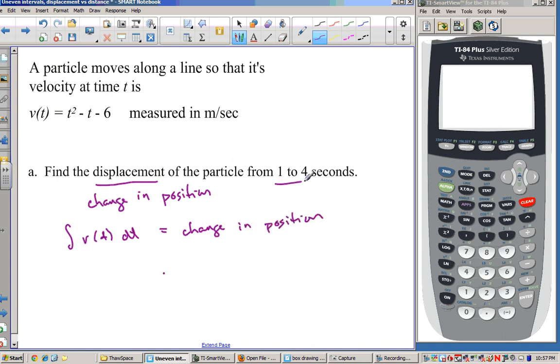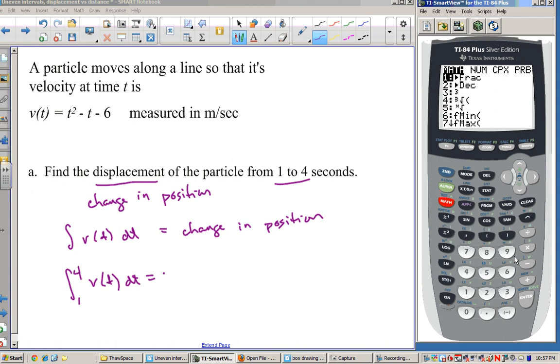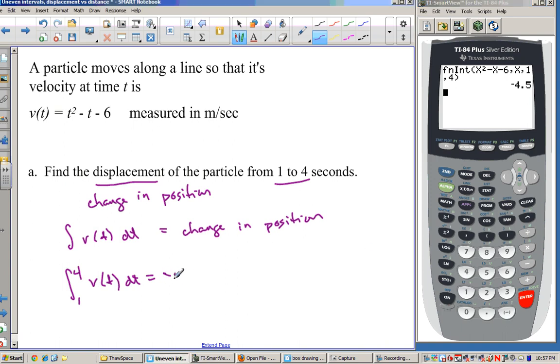So in this case, we're interested in what happens between 1 and 4 seconds. So we're going to take the integral from 1 to 4 of this function, which was named v(t) dt. And now we can just go over here in our calculator and give this a go. So we're going to choose our integral function, and we're going to throw in x squared minus x minus 6, comma x, comma 1, comma 4. There we go. And we got negative 4.5. That means the particle ended up 4.5 units to the left.